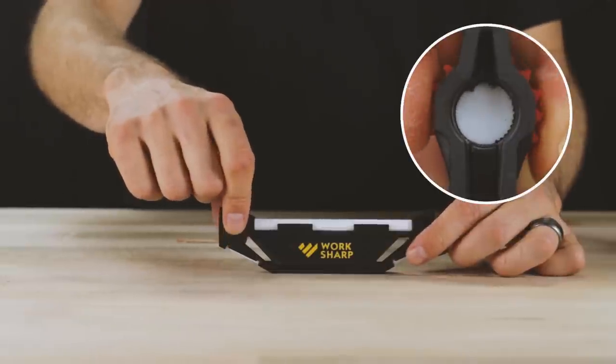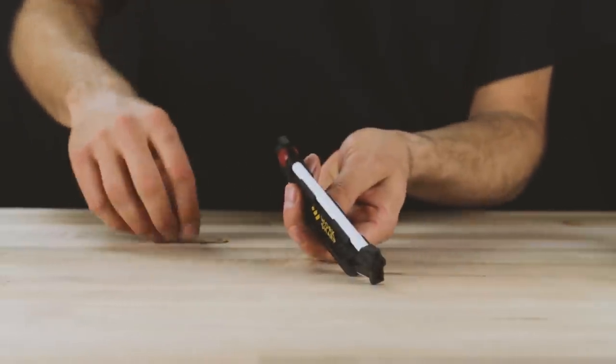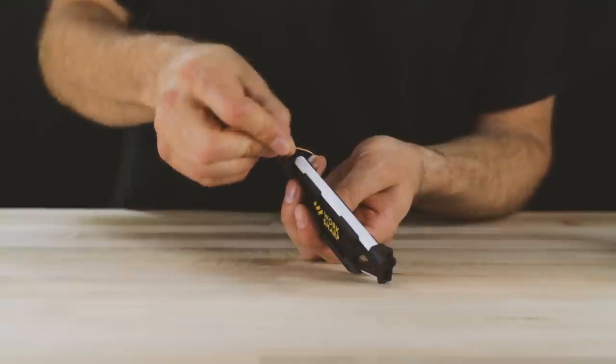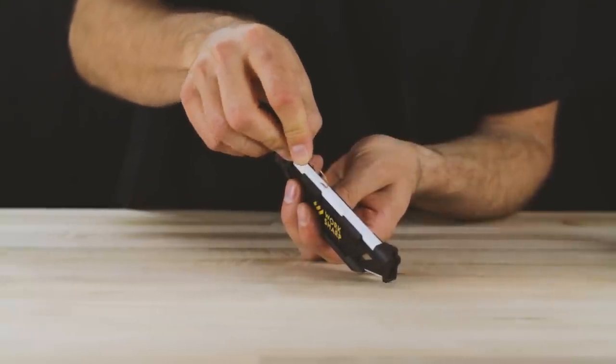Sharpening fish hooks. Rotate the ceramic rod to the fish hook groove setting. Place hook into groove and slide back and forth with light pressure.